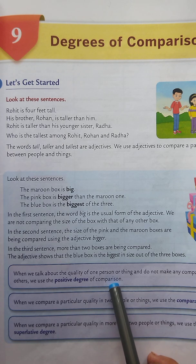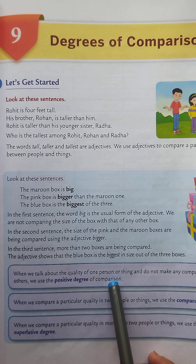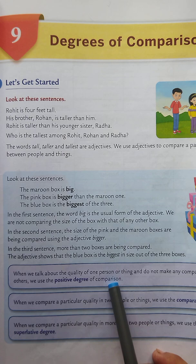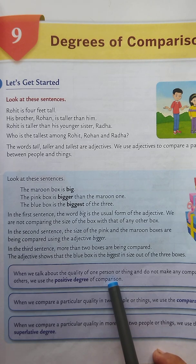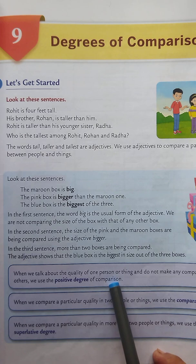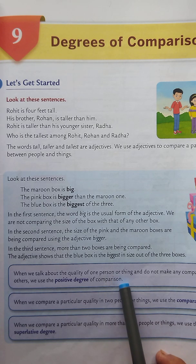Example: Mr. Mehta is a rich man — here I am not comparing Mr. Mehta with any other person. Another example: Asansol is a big city — here also I am not comparing Asansol with any other city. So this is the positive degree of comparison.